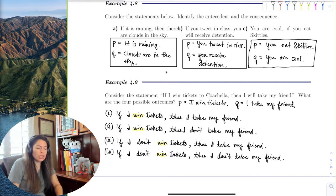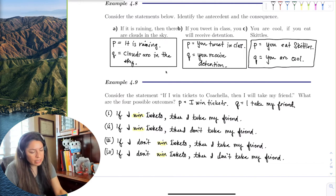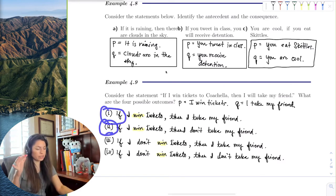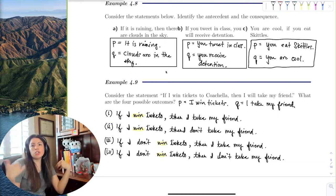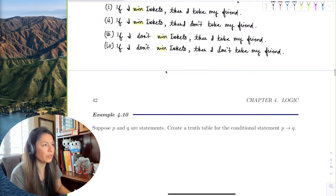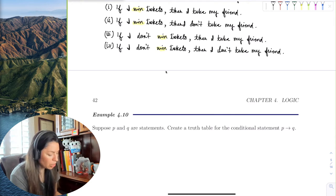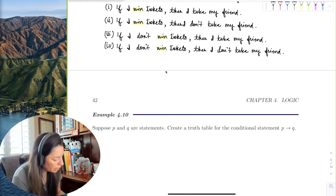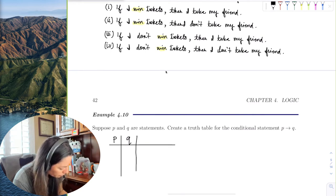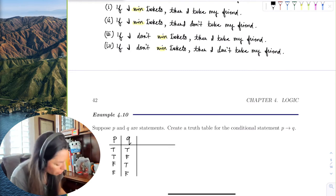From these four scenarios we can build a truth table. Remember: two statements, two choices — true or false — make four scenarios. Let's rewrite this in symbolic notation. The columns are P and Q; Q is the consequence. The truth values follow the pattern: TT, TF, FT, FF. So if P then Q — let's evaluate each row.